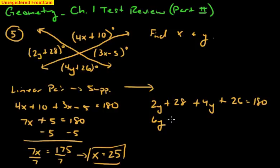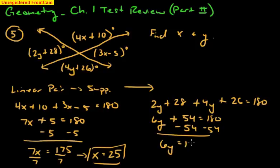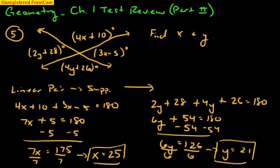2y and 4y is 6y, 28 and 26 is 54. That's 180. We subtract 54 from both sides, 6y equals 126, and divide by 6. And I believe we get y is 21. So linear pairs, by the linear pair postulate, they are supplementary. But you have to identify them from the very beginning.